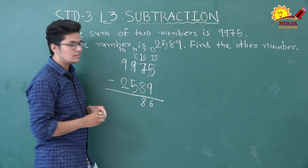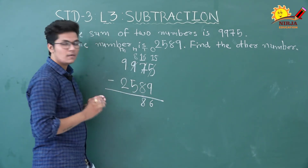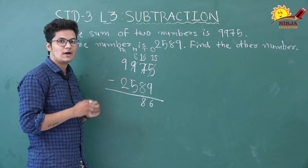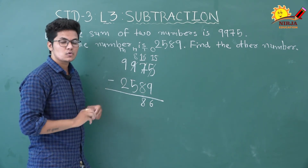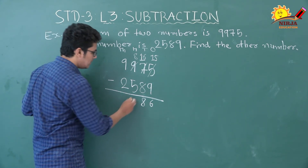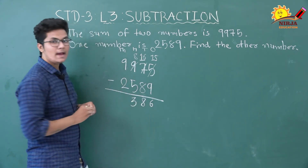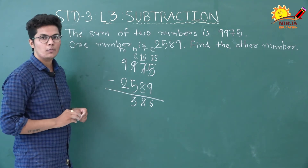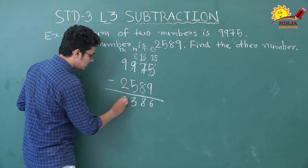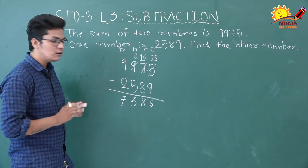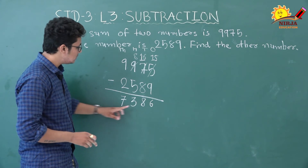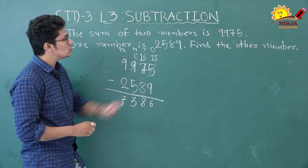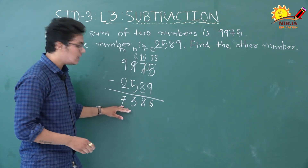Finally, the thousands column: 9 minus 2 is 7. So our second number is 7386. Let's check whether this answer is correct or not using the relationship between addition and subtraction.